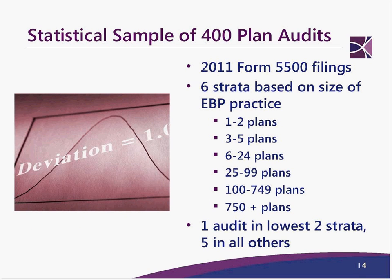The 400 plan audits will be based on 2011 Form 5500s, using six different strata — from one to two plans up through larger tiers. They'll pick one audit in each of the two lowest strata and five in all others, aiming for 400 total.